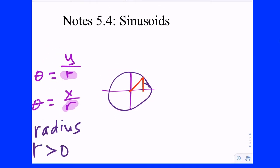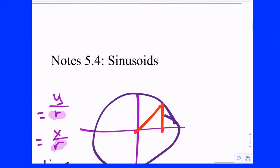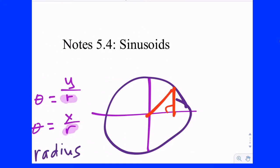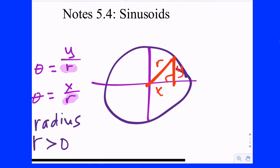If you drew a generic reference triangle, r ends up being the hypotenuse of our triangle. And what do you know in any triangle that actually exists — the relation between the hypotenuse and the other two sides? The hypotenuse is always larger. So if there is a triangle at all, r is going to be greater than x and r is going to be greater than y. We know that we have these quadrantal angles — when y is zero we've collapsed the triangle to the x-axis, and when x is zero we've collapsed it to the y-axis.